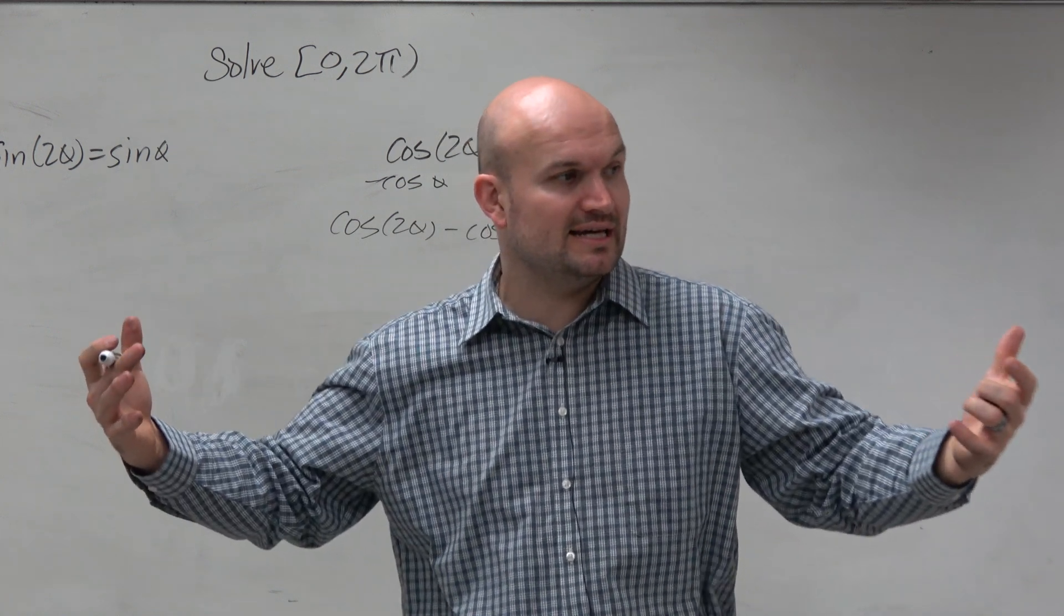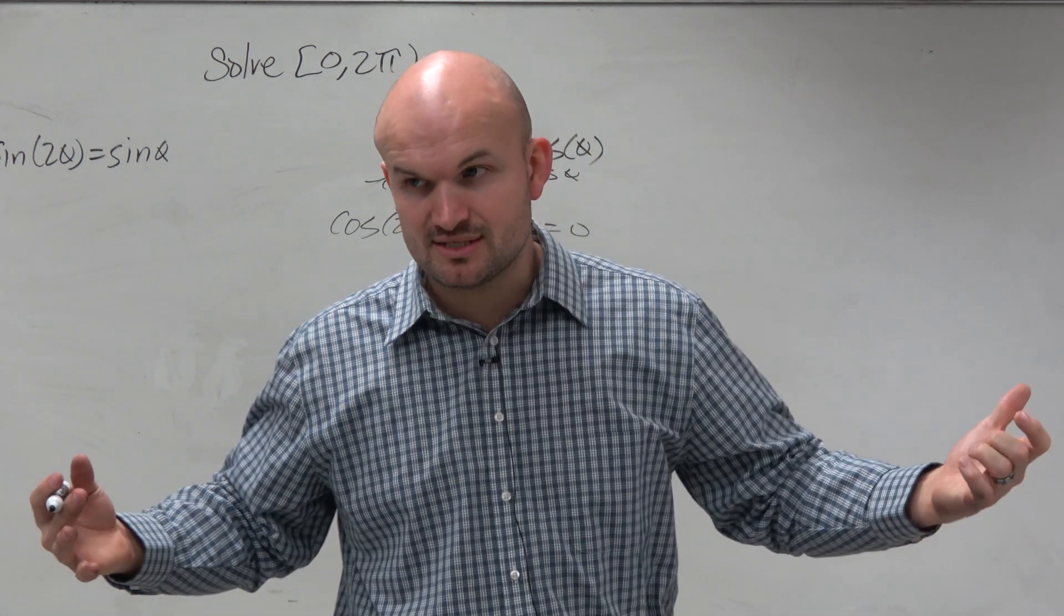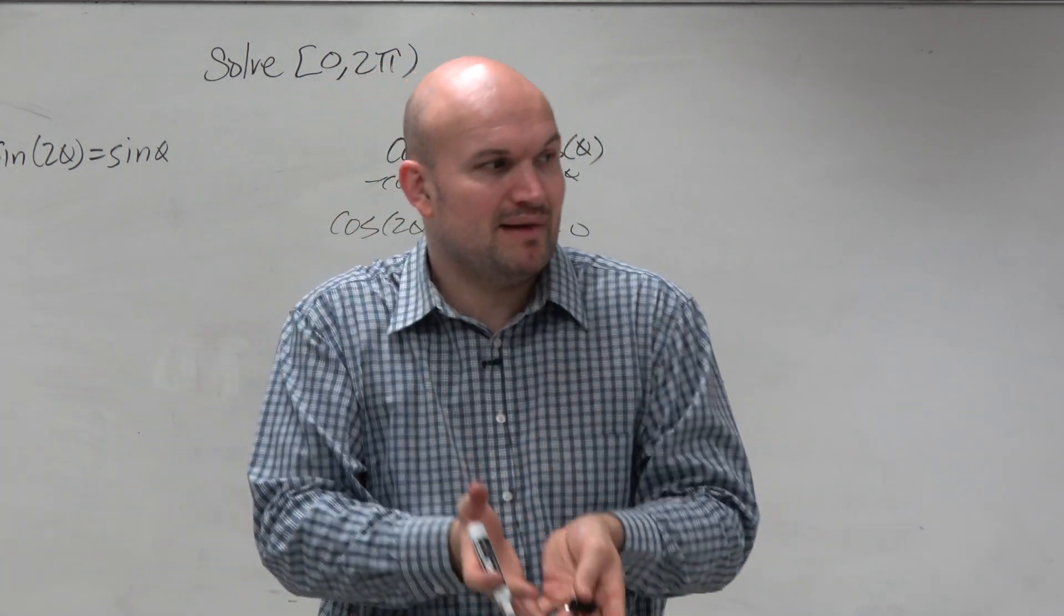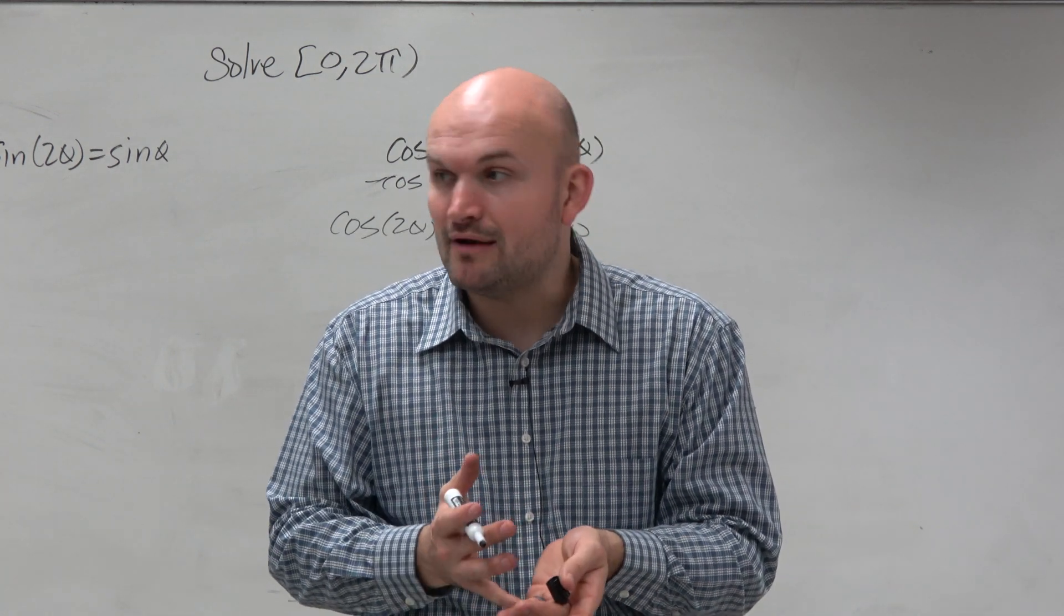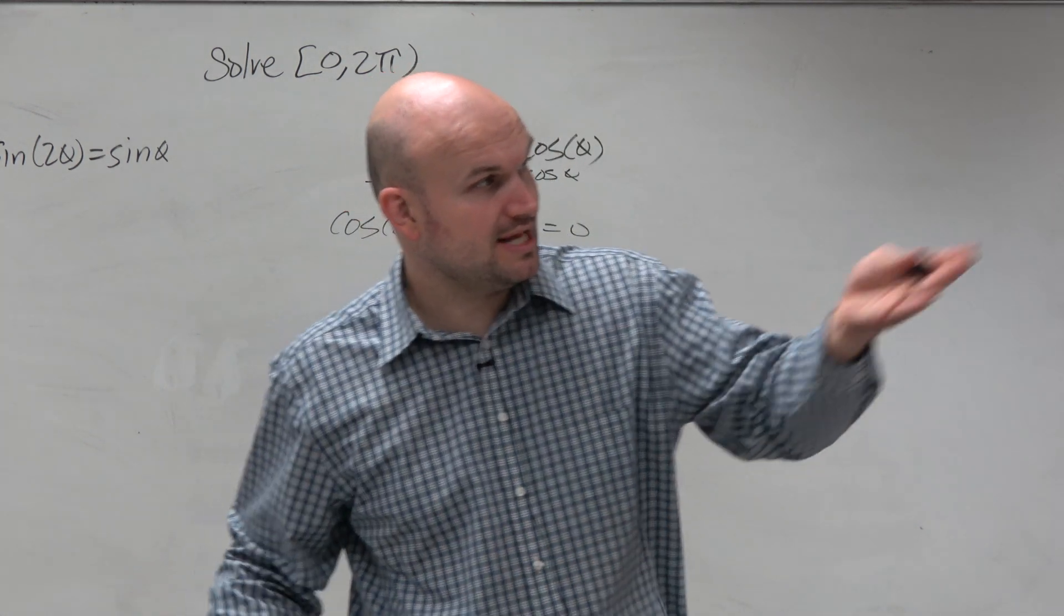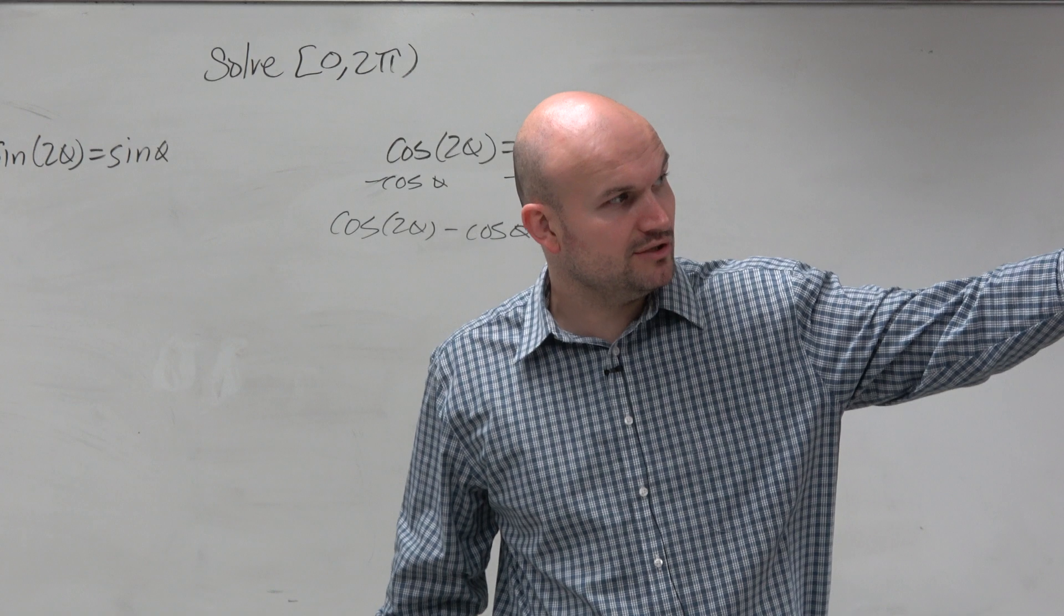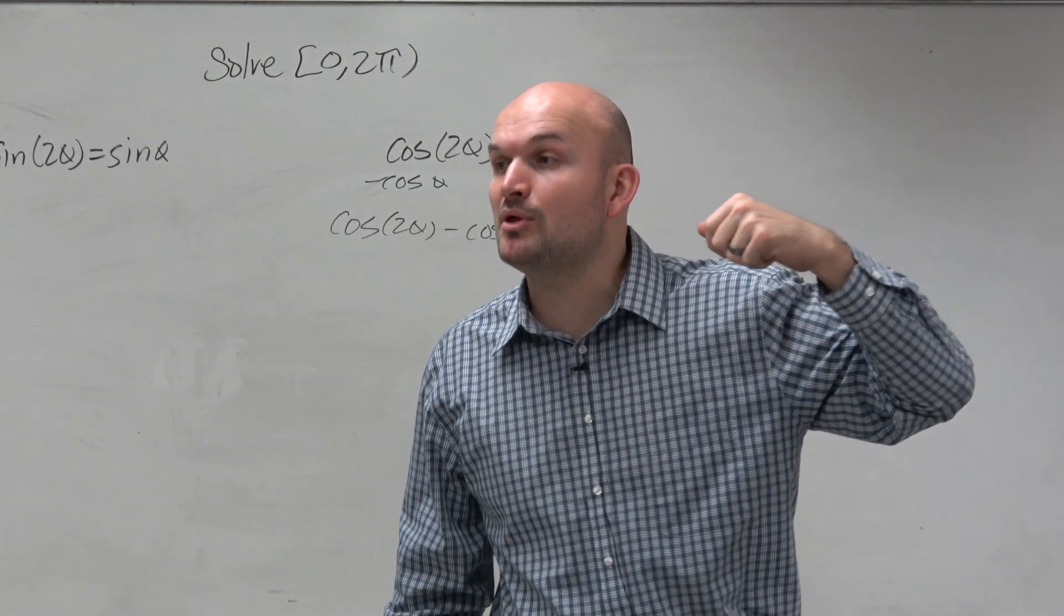If we get rid of cosine on both sides, that doesn't help us. When we get them to the same side, we can't combine them. So now what we have now entered is a whole other list of problems we can use. You can see we have the double angle formulas.